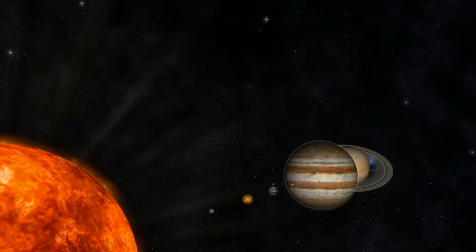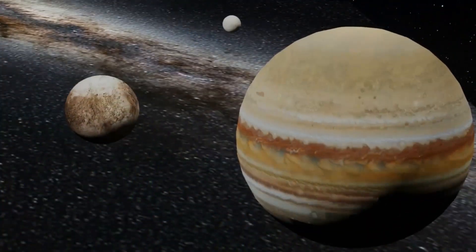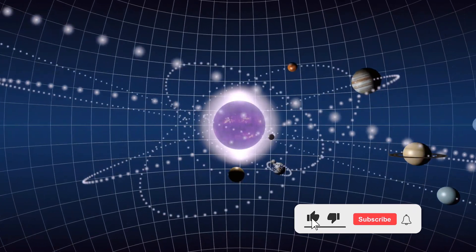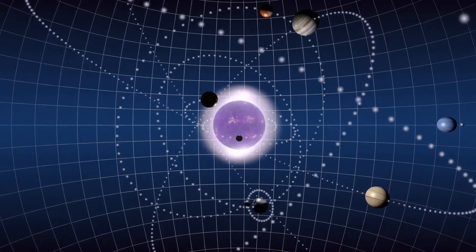The hunt for a mysterious ninth planet in our solar system has picked up recently thanks to some new evidence discovered by NASA. While the planet has remained visually elusive to astronomers, they believe that it may be hiding somewhere beyond the orbit of Pluto. Let's take a closer look at these latest findings.